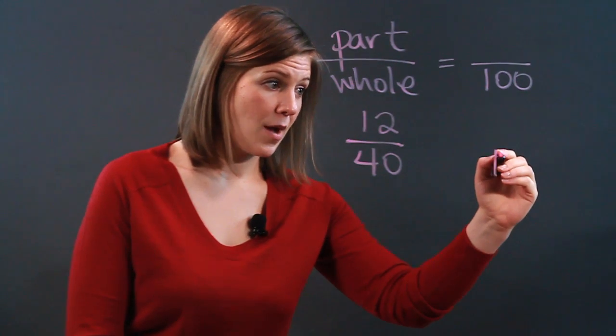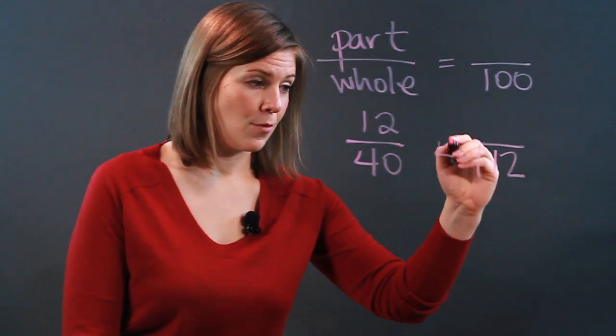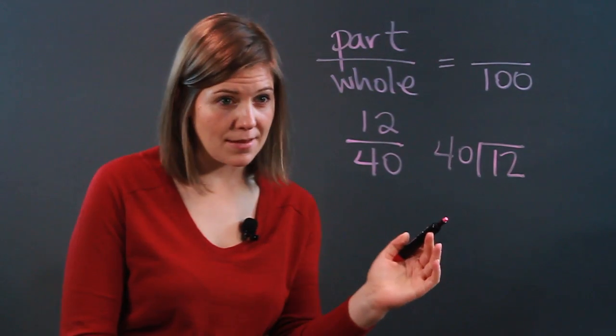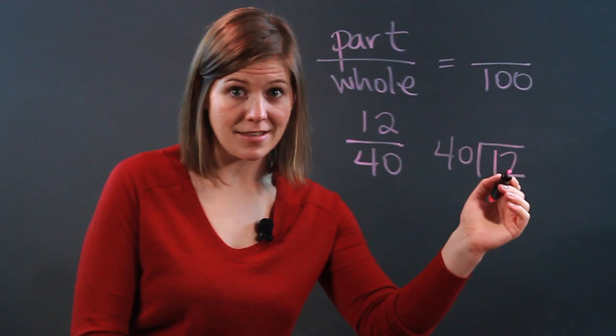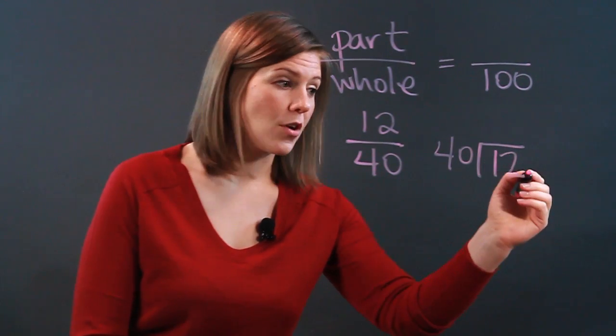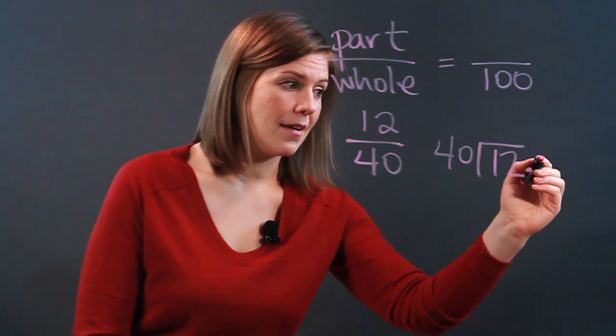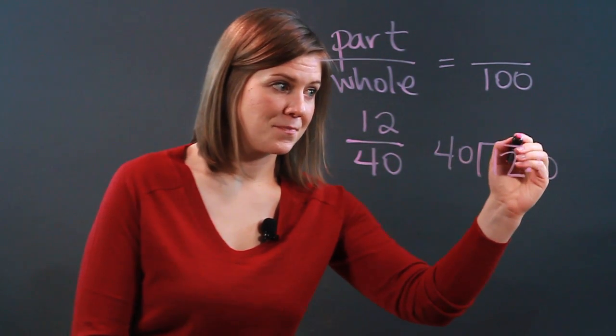So we'll actually do that. We'll say 12 divided by 40. It looks crazy because the small number is inside the shed, but we're going to make it work because we're actually going to add zeros.